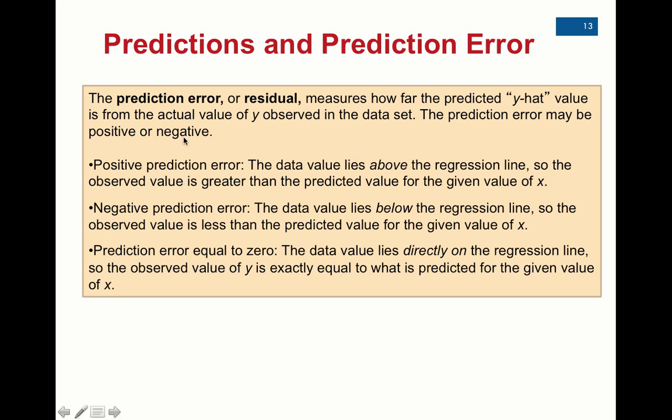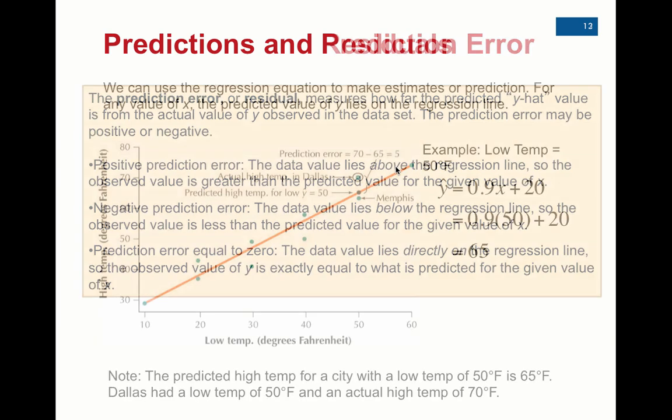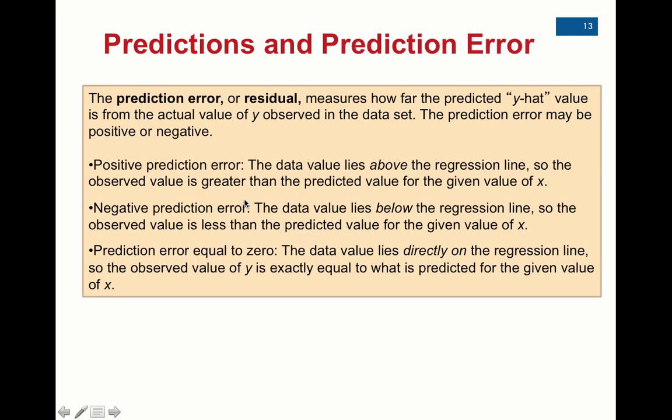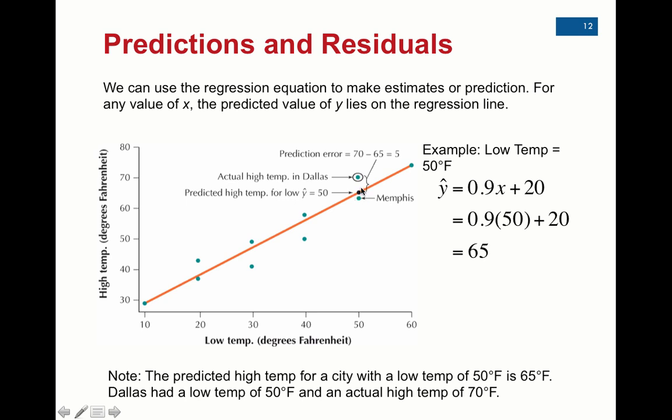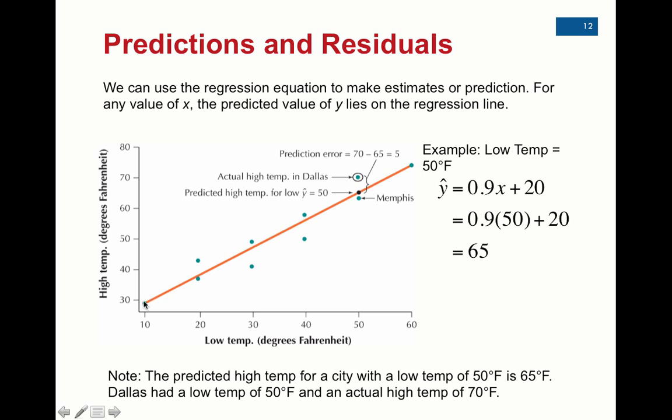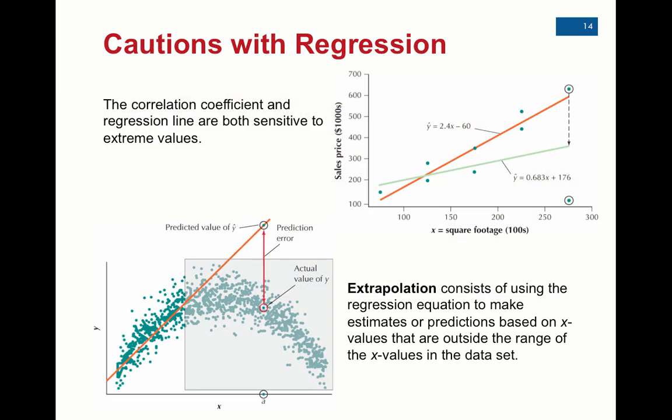Once again, just summarizing predictions and residuals, if the error is positive, that means the data value is above the regression line. That happened right here. Dallas is above the regression line, five units above, so the prediction error was positive. If the prediction error is negative, then the data value lies below the mean, which is like Memphis. Memphis' residual was negative 1, meaning that its observed high temp was 1 below the predicted high temp for 50 degrees. And if the prediction error equals 0, that means the data value lies directly on the regression line. So you'll be expected to come up with the equation of the regression line using our calculator, then you'll have to manually plug in to find a prediction and also a residual.